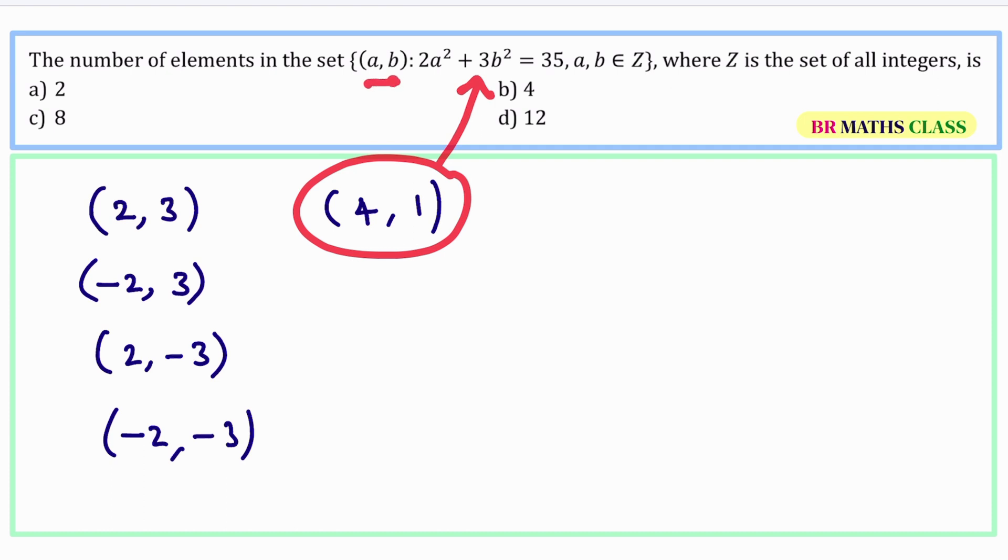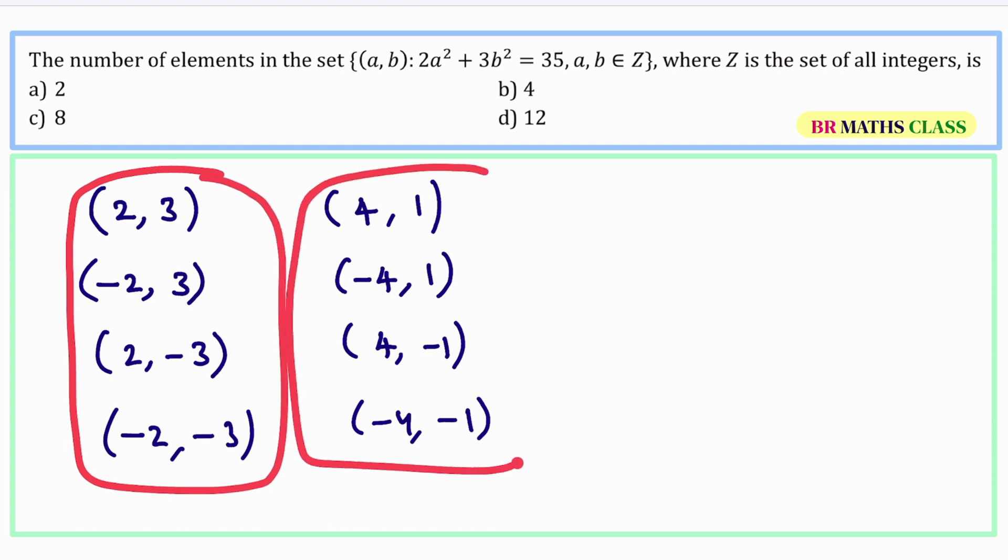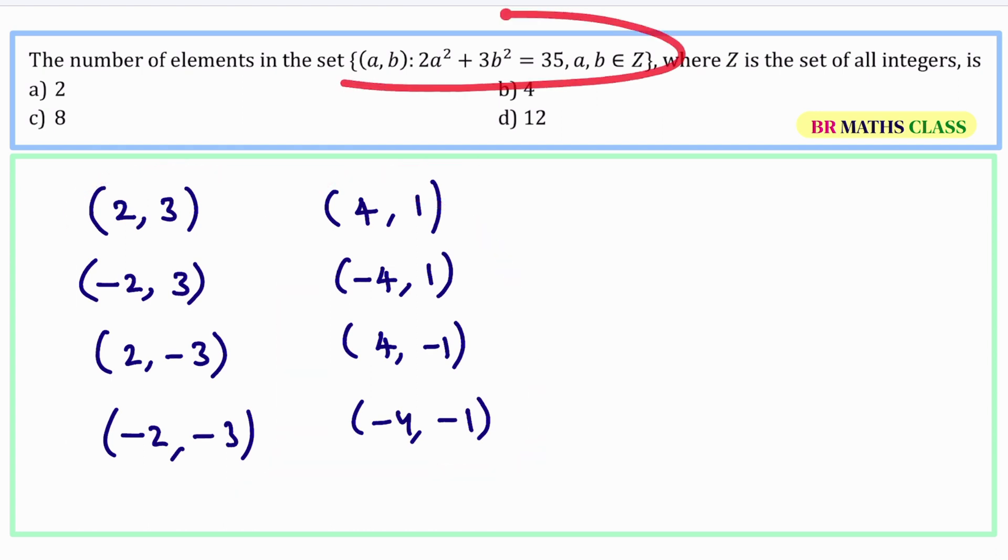This is one order pair in this set. What other thing satisfies: negative 4 comma 1, 4 comma negative 1, negative 4 comma negative 1. So, total how many number of elements present in this set they are asking. So, you got total 8 order pairs satisfying this equation. So, the right answer is option C.